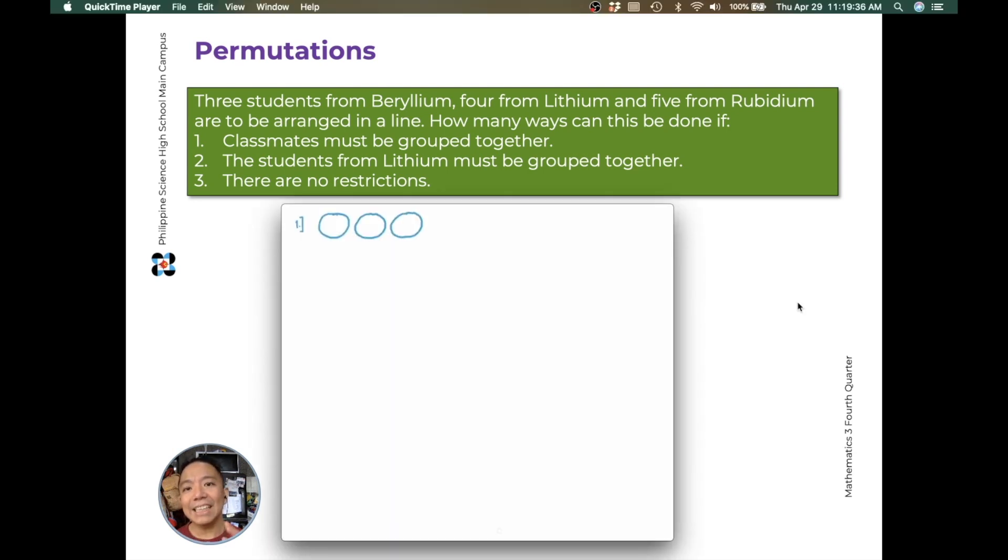For the first problem, we can think of it as having three groups, and they need to be arranged in a line. Because it could be beryllium first, then lithium, then rubidium. Or lithium first, then rubidium, then beryllium. Or rubidium, then beryllium, lithium, and so on. So how many ways can we arrange our 3 sections in a line? That will be 3 factorial ways to arrange the 3 sections: beryllium, lithium, and rubidium.